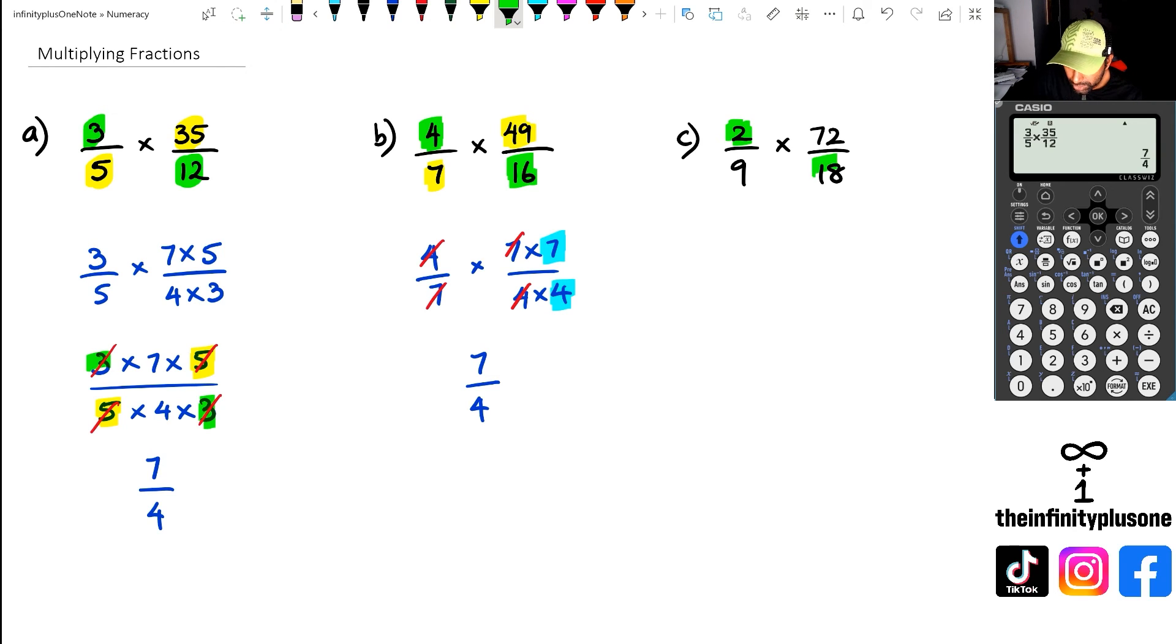So if you look at it, you've got 2 and 18. Now 2 and 18 is connected because you can actually say, 18 is 9 times 2. So what you can do, and some people do this, is they kind of go, well, 2 divided by 2 is 1. 18 divided by 2 is 9.